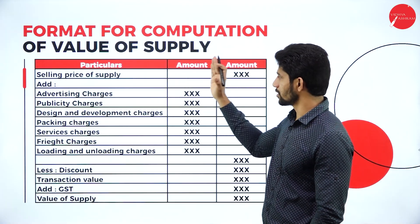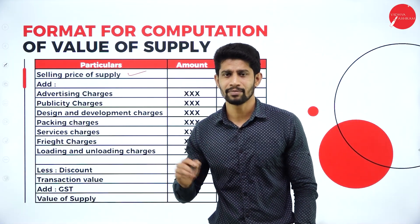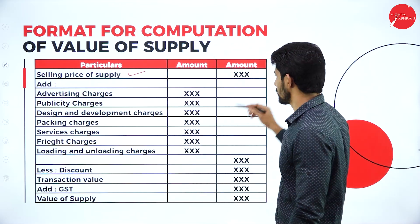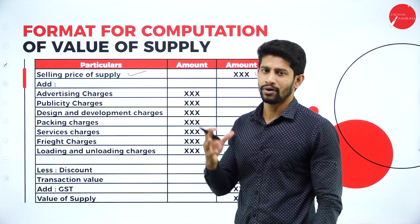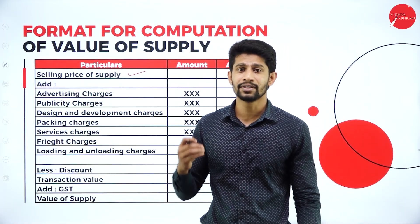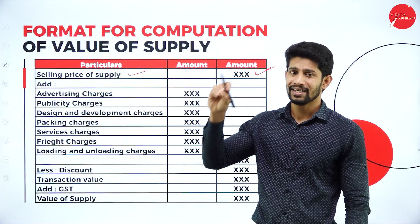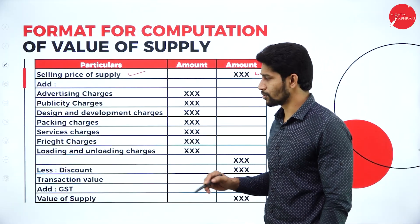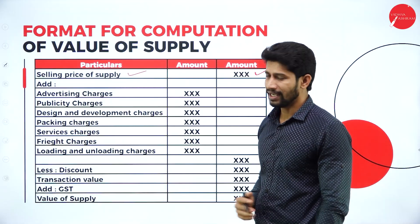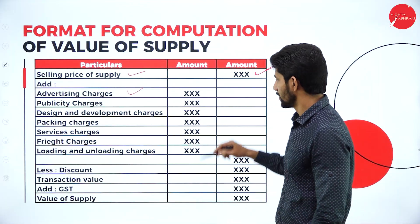The first point you always consider is the selling price of supply, which will be given in the problem itself — the selling price of the product, machinery, or any supply. To that, we add expenses incurred with respect to that supply. The relevant expenses include advertising charges, publicity charges, design and development charges, packing charges, and service charges.